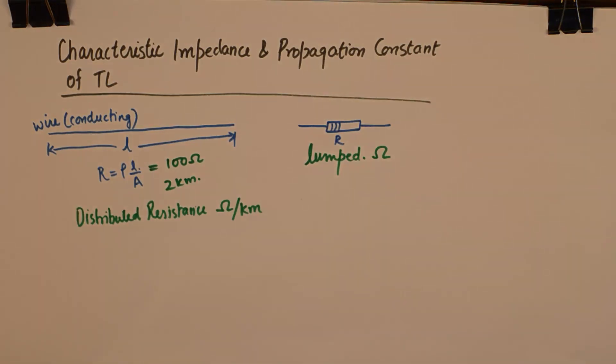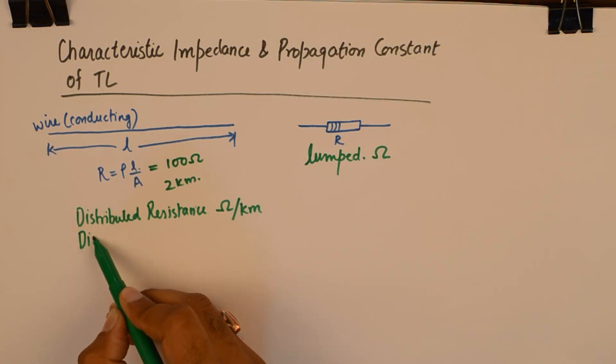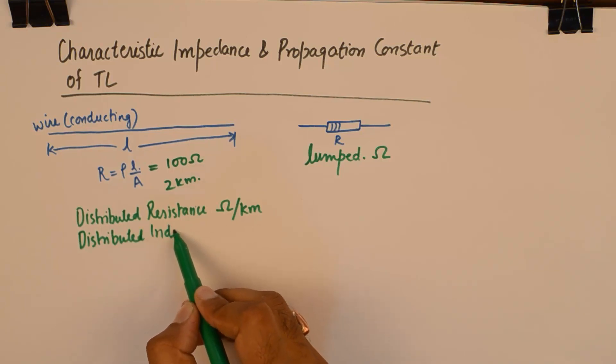Thinking on the same lines, we now can form an analogy that any wire which has a significant length would also offer some distributed inductance, and it will also offer some distributed capacitance and distributed conductance.